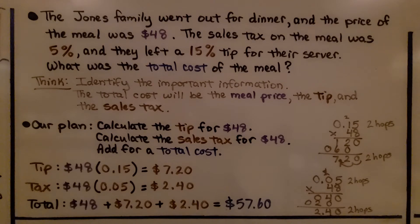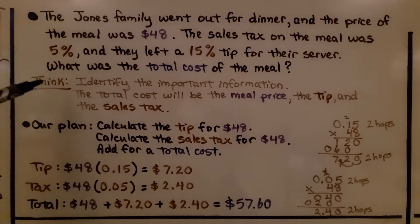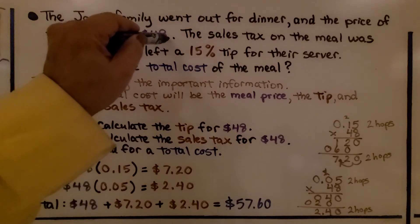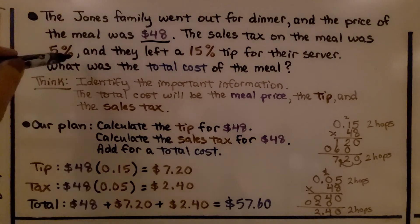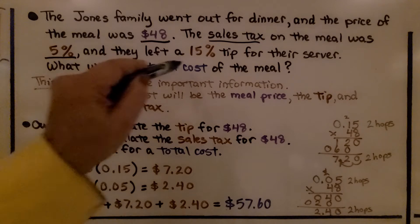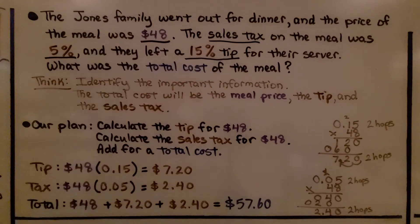The Jones family went out for dinner and the price of the meal was $48. The sales tax on the meal was 5% and they left a 15% tip for their server. What was the total cost of their meal? We need to identify the important information: the price of the meal was $48, the sales tax is 5%, and there's a 15% tip. The total cost will be the meal price, the tip, and the sales tax.